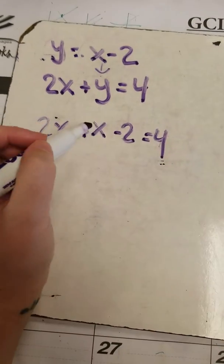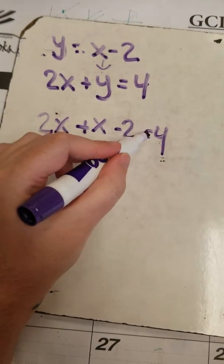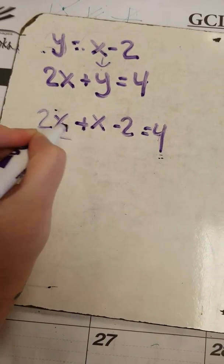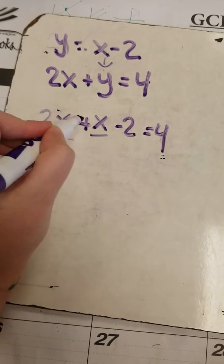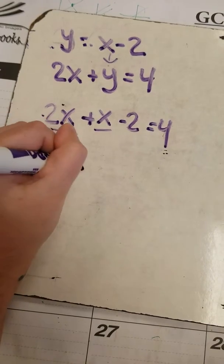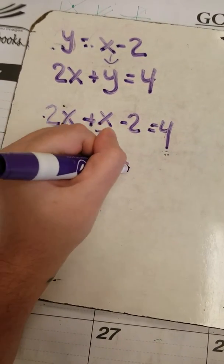Now I can look at the left side of my equation. Remember with the equals sign, you can't just be moving stuff around. I have an x and an x. Positive 2 plus 1 equals positive 3x. I can't do anything with that negative 2, so I'm going to put it right there.